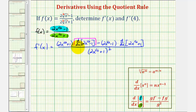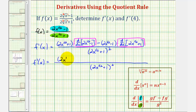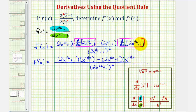Now we'll find each derivative and then simplify. The derivative of two times x to the one half: we multiply by one half — two times one half is one — and subtract one from the exponent, giving negative one half. So this is x to the negative one half, and the derivative of the constant is zero. Similarly, the derivative of the denominator term gives x to the negative one half as well, with the constant term's derivative being zero.